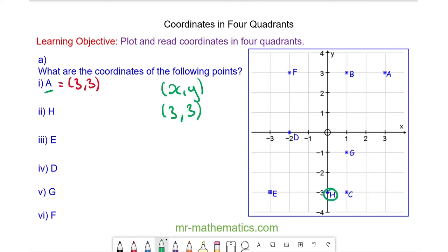For coordinate H, you can see the x value is at zero and the y value is at negative three. And for point E, you can see the x value is at negative three and the y value is also at negative three.